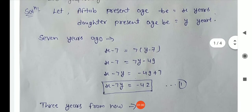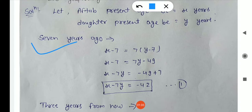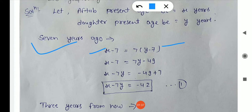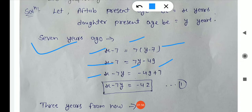According to the question, 7 years ago means current age minus 7. So Aftab's age 7 years ago is X minus 7, and his daughter's age 7 years ago is Y minus 7. The condition says 7 years ago he was 7 times his daughter's age, so X minus 7 equals 7 times (Y minus 7), which gives X minus 7 equals 7Y minus 49. Rearranging, X minus 7Y equals minus 42. This is our first equation.